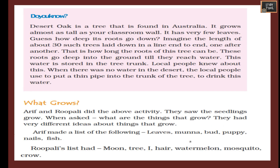The desert oak is a tree found in Australia. It grows almost as tall as your classroom wall and has very few leaves. Its roots go very deep — imagine the length of about 30 such trees laid end to end: that is how long the roots of this tree can be. These roots go deep into the ground until they reach water. Local people used to put a thin pipe into the trunk of the tree to drink this water when there was no water in the desert.